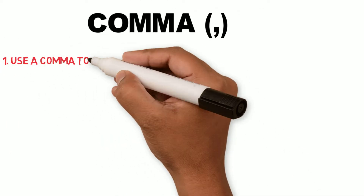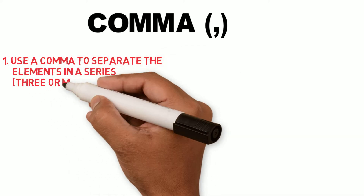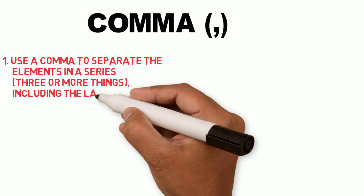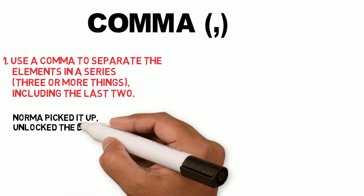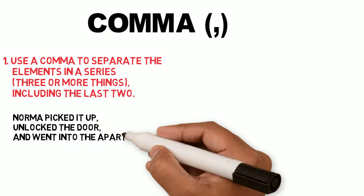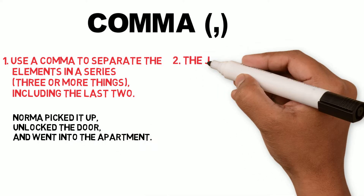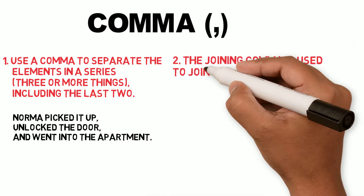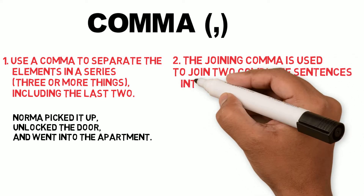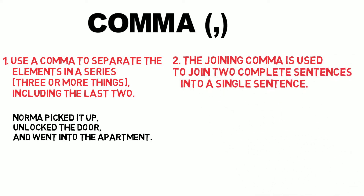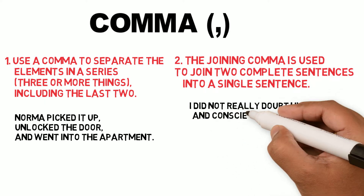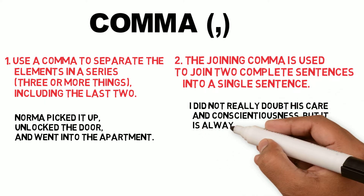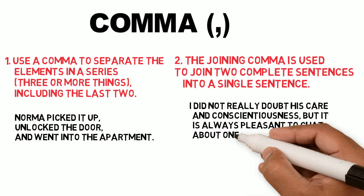Comma. Use a comma to separate the elements in a series, three or more things. For example, Norma picked it up, unlocked the door and went into the apartment. The joining comma is used to join two complete sentences into a single sentence. For example, I did not really doubt his care and consciousness, but it is always pleasant to chat about oneself.